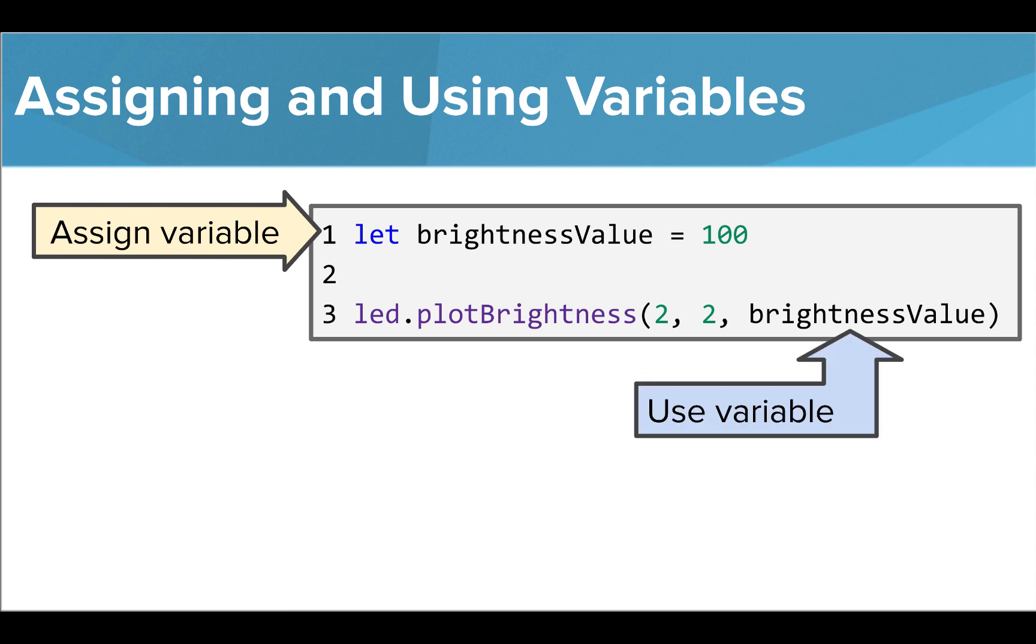To use the variable, we plug its name wherever we want to use its value. In this case, we want the value of the brightnessValue variable, which is 100, to control the brightness of our middle LED. So we plug it into our command where we would normally write the number for brightness.